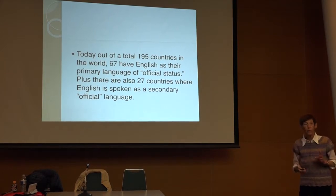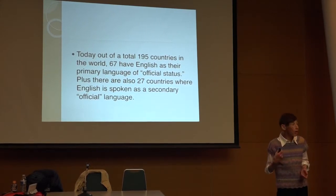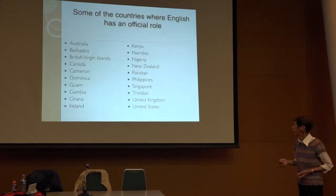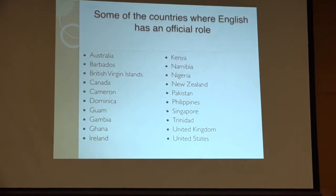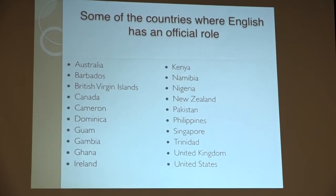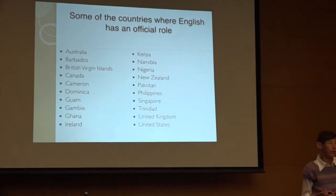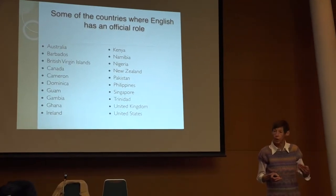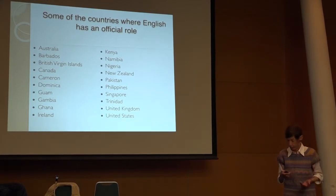What has fueled the spread of English is that it is an official language in many countries — things like Australia, but more importantly Nigeria, India, Kenya, Ghana. When we think about diversity in our ELT texts, we rarely see that diversity. We generally see the diversity of Caucasians — that's the diversity we see in Japanese texts, a very narrow view.